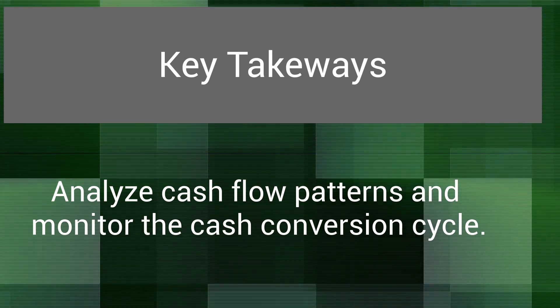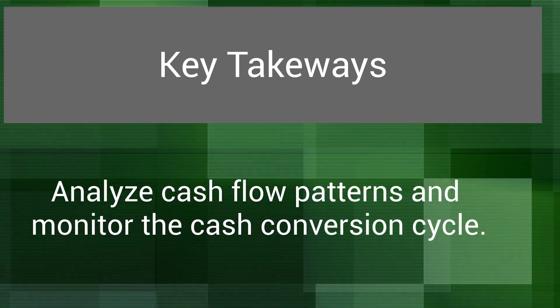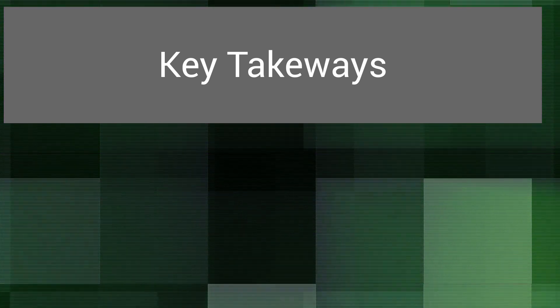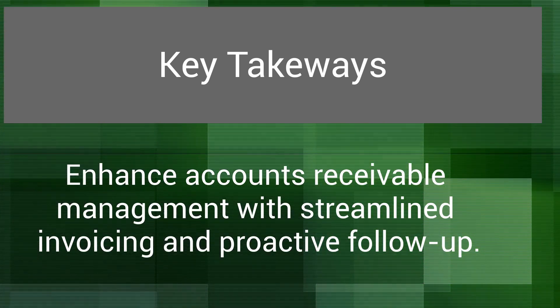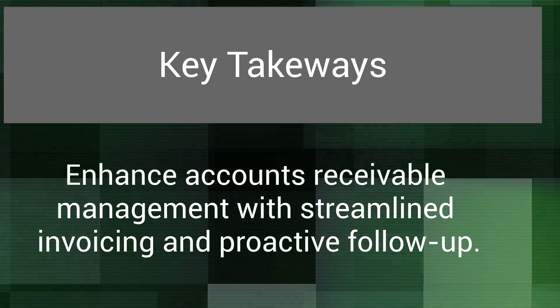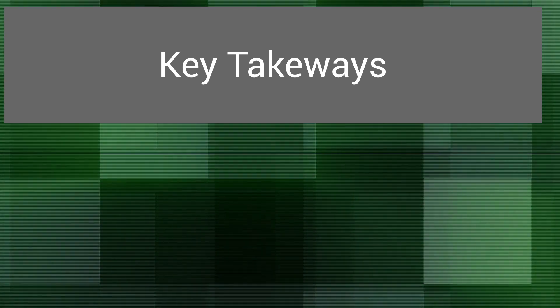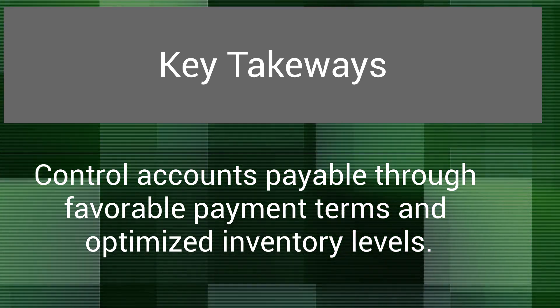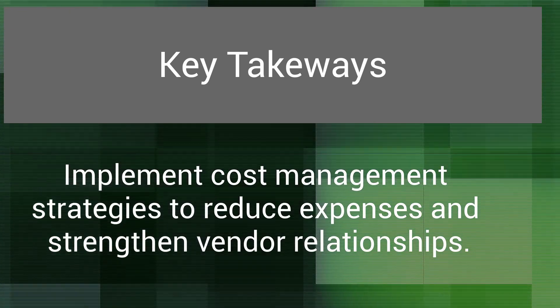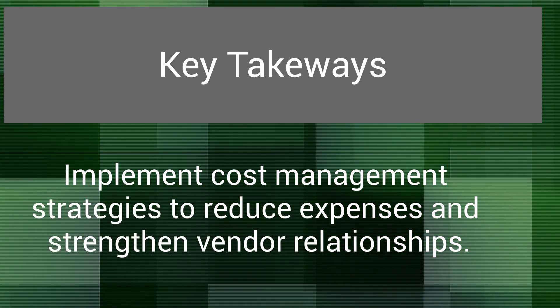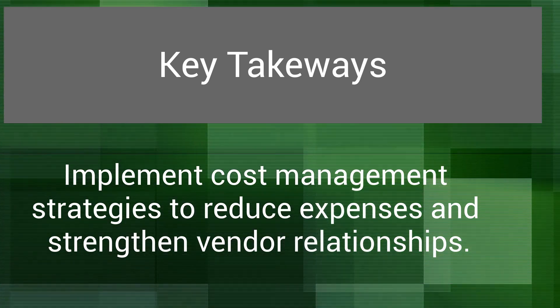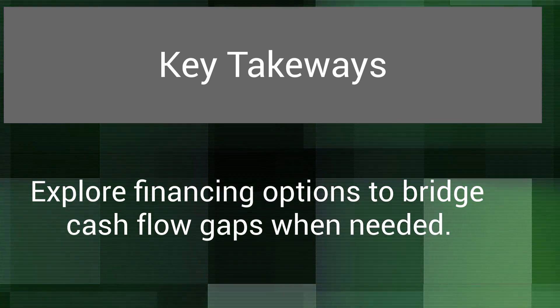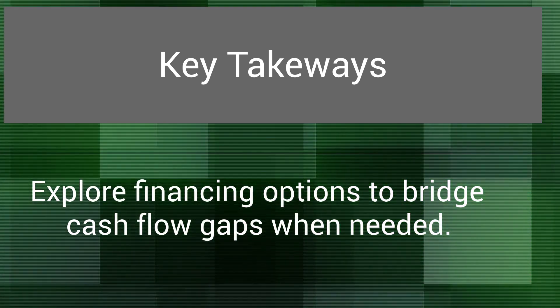Let's summarize the key points we've covered in cash flow improvement strategies. Analyze cash flow patterns and monitor the cash conversion cycle. Enhance accounts receivable management with streamlined invoicing and proactive follow-up. Control accounts payable through favorable payment terms and optimized inventory levels. Implement cost management strategies to reduce expenses and strengthen vendor relationships. Explore financing options to bridge cash flow gaps when needed.